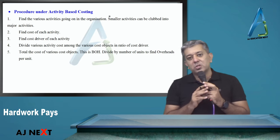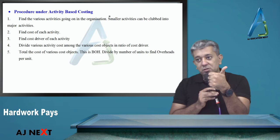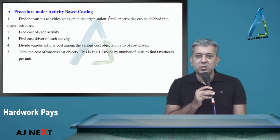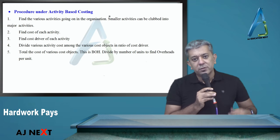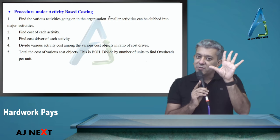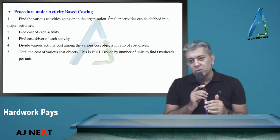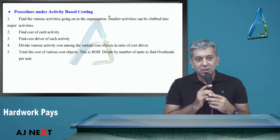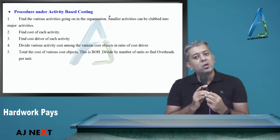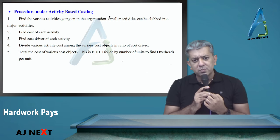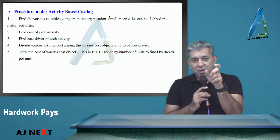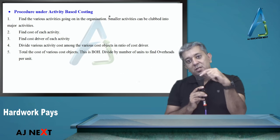But nowadays we don't follow absorption costing. Disadvantages: only applicable to manufacturing sector, not to service sector. For your base you have only six options: output, machine hour, labor hour, labor cost, material cost, prime cost. What about other companies, other factors? Every cost in this world is not dependent on these.